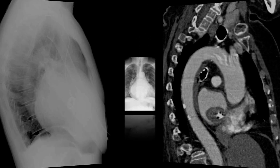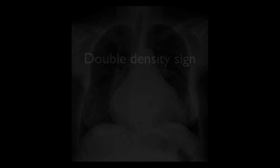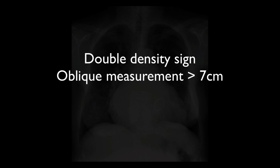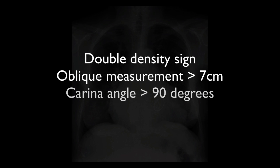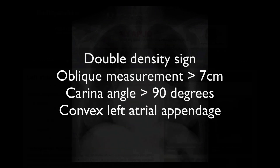So hopefully now you'll be able to confidently identify left atrial enlargement on chest radiographs by looking for the double density sign, an oblique measurement greater than 7cm, a carinal angle greater than 90 degrees, and convexity of the left atrial appendage.